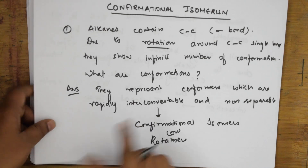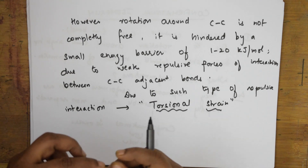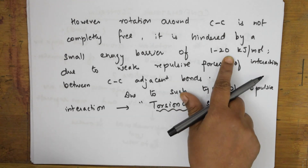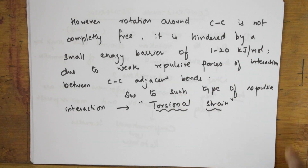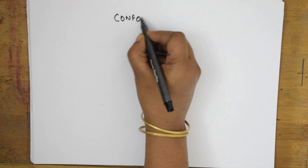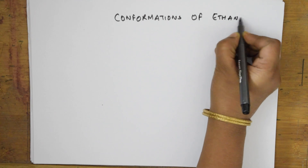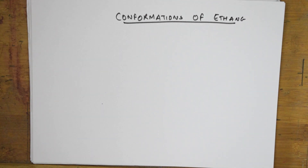So I've taught you what conformational isomers are, and I've explained the torsional strain — the restricted rotation due to repulsive interaction creates a small energy difference of about 20 kilojoules per mole. Now we'll apply all these concepts taking an example: conformations of ethane. Because of the carbon-carbon single bond, the molecule starts rotating and shows different types of conformers, including sawhorse conformations and Newman projections.